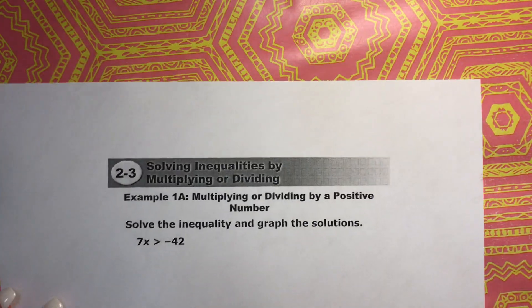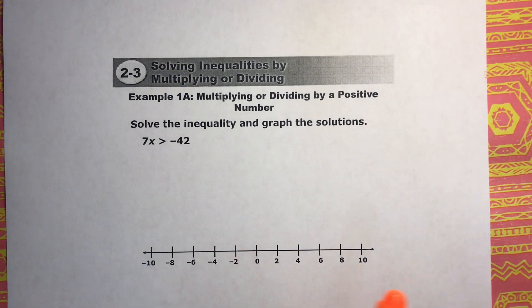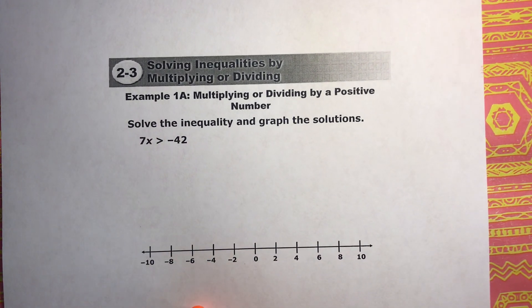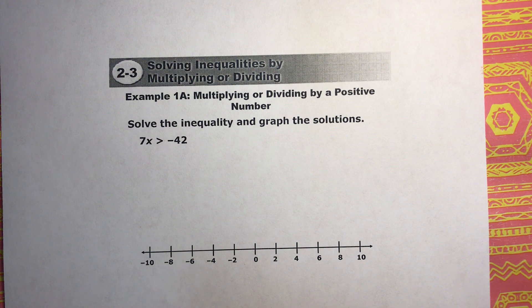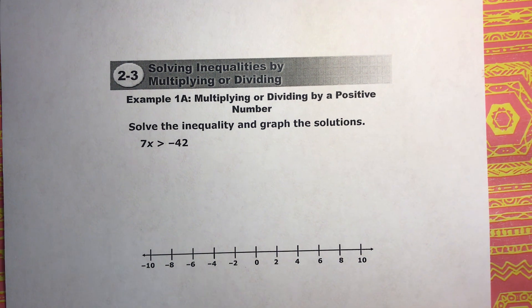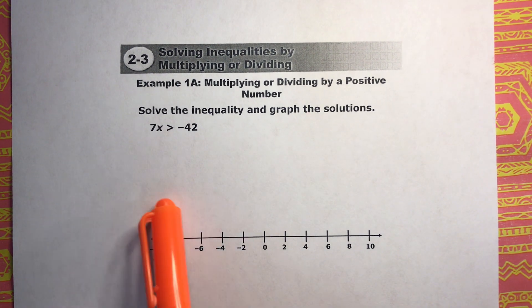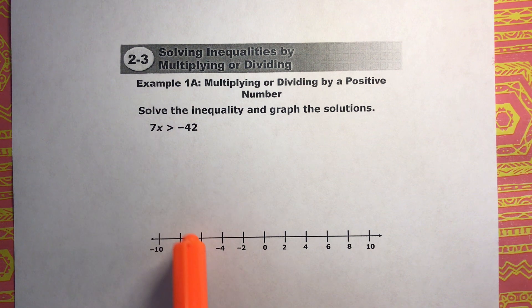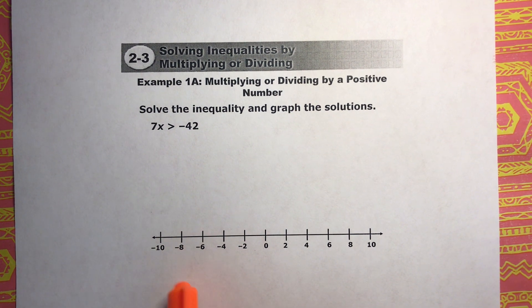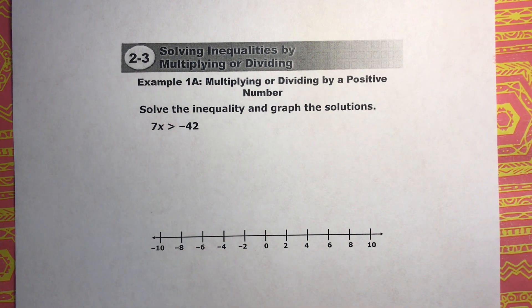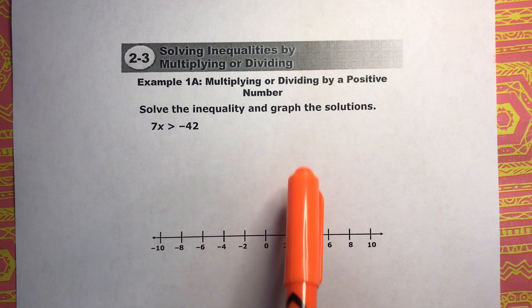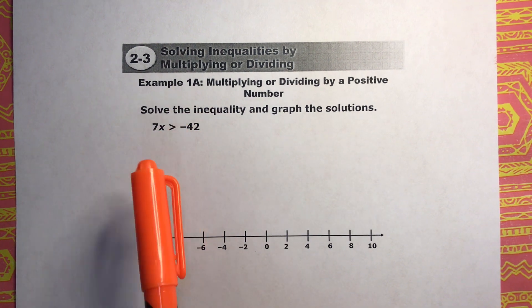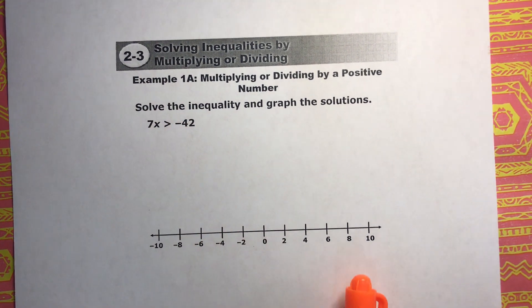So let's just go ahead and get started with our first example. The main thing is whenever you're solving these inequalities, you really just solve them exactly like you would when you solve an equation. There is only one thing you have to remember, and that's when you multiply or divide by a negative number, you flip the sign. But we're not there yet, so that will be in the next example. So right now, just think of these as equations, and you would do everything the same.